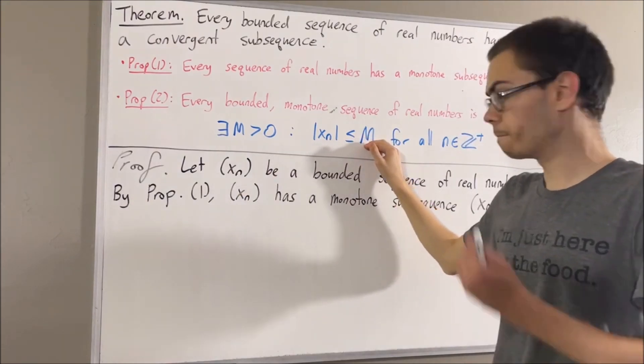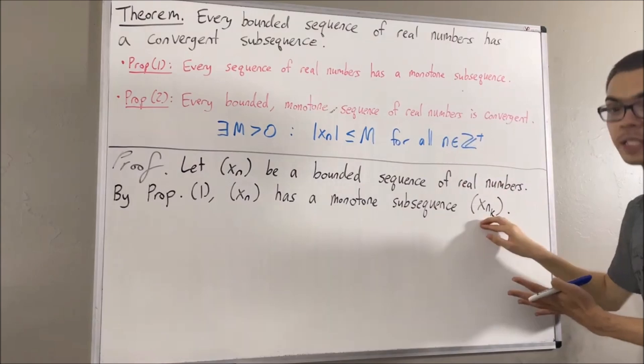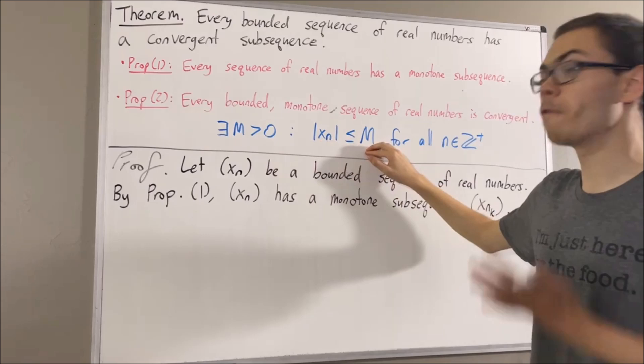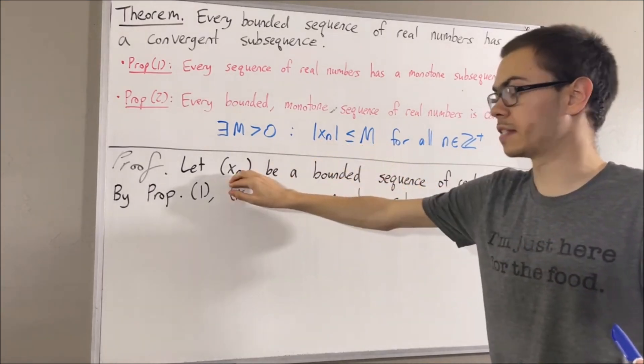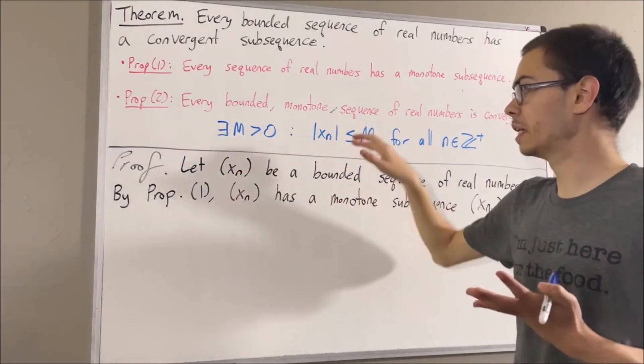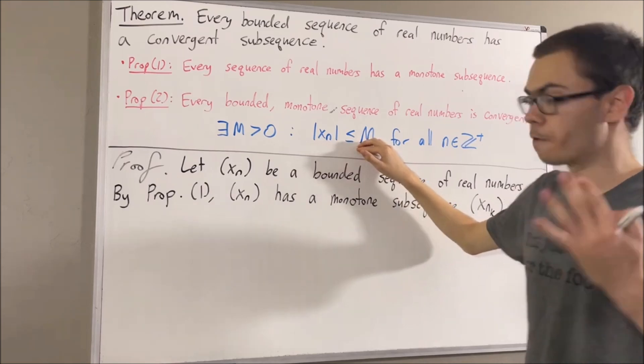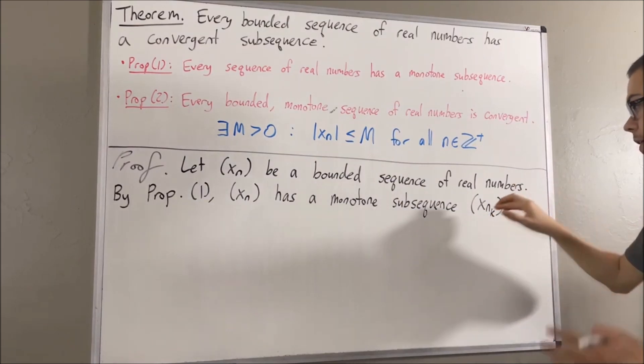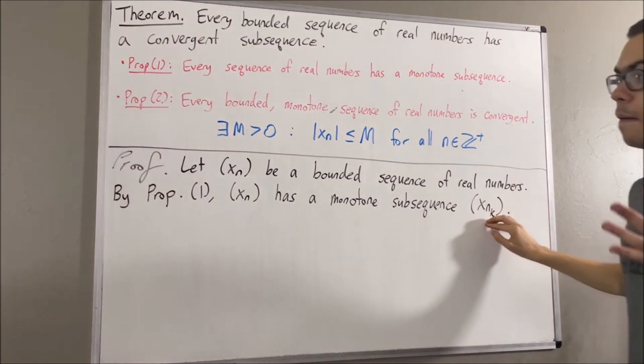Every term in the subsequence belongs to xn. So since this inequality holds for every term in the sequence xn, then certainly this inequality also holds for every term in the subsequence xnk. Therefore, xnk must be bounded.